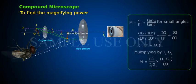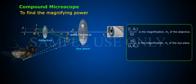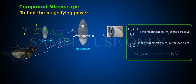Multiplying by I1G1, M equals (IG by I1G1) into (I1G1 by OJ). Here I1G1 by OJ is the magnification Mo of the objective, and IG by I1G1 is the magnification Me of the eyepiece. Therefore M equals Mo into Me. — Equation 1.